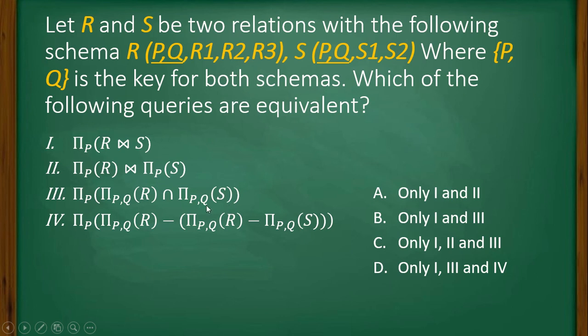Now the fourth one, if you look at this, projection PQ minus R here, but this bracket starts here: projection PQ from R minus projection PQ from S, and this bracket ends here, right?